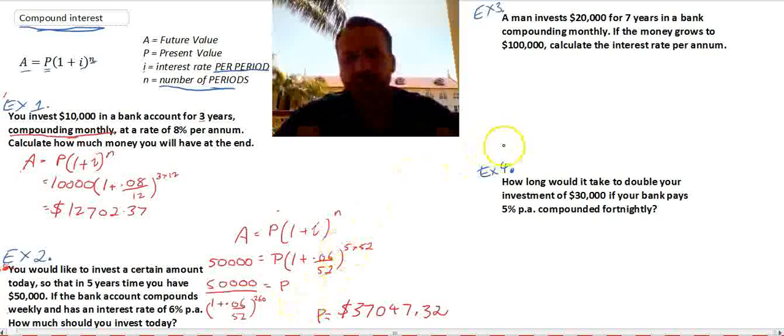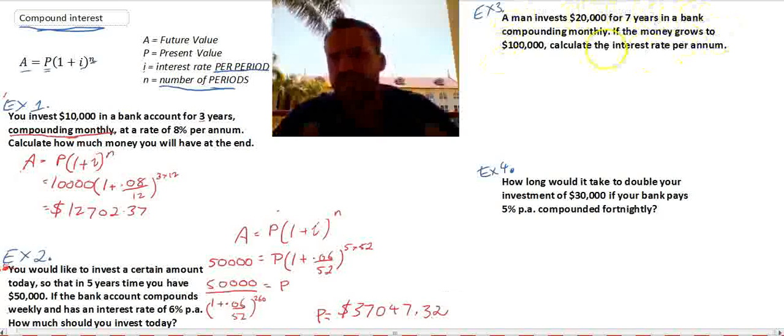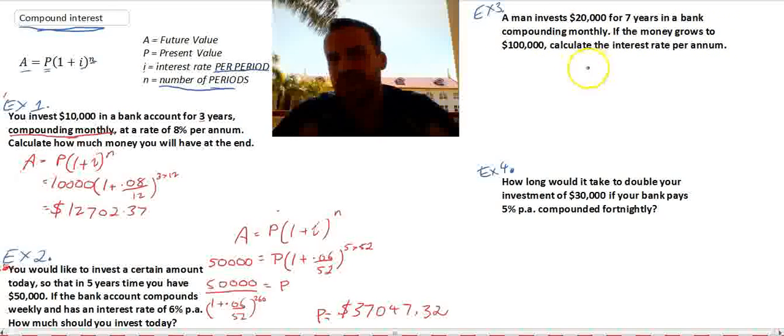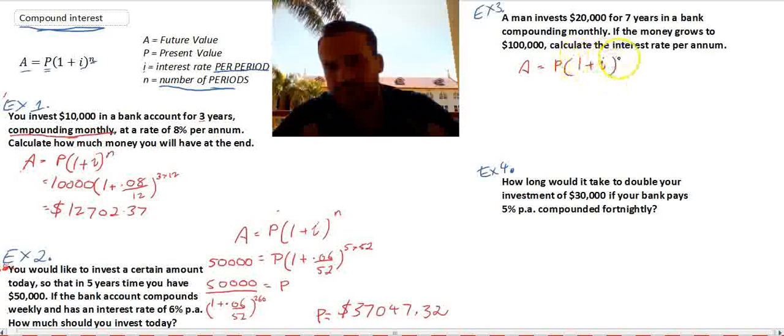Okay, moving along. This time we're going to calculate the unknown interest rate. So a man invests $20,000 for seven years in a bank compounding monthly. If the money grows to $100,000, calculate the interest rate per annum. So careful here. Let's take a look at it.